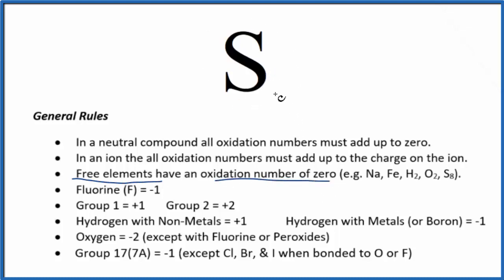If you have something like octosulfur S8, it's still zero because it's all the same element, so there's not going to be any change in oxidation state. But when sulfur bonds with other elements, then we do have a change in oxidation state, and sulfur can have a number of different oxidation states.